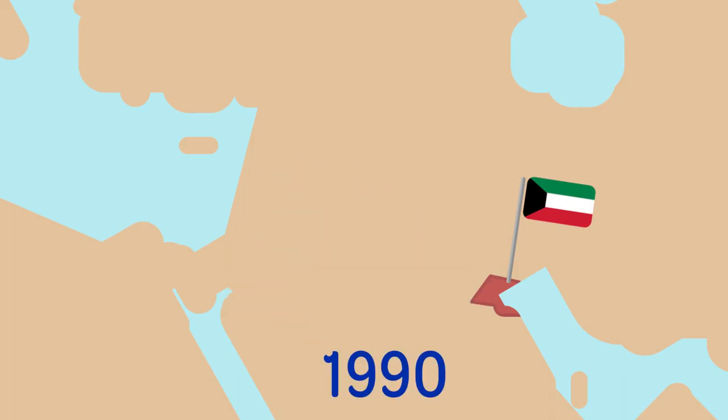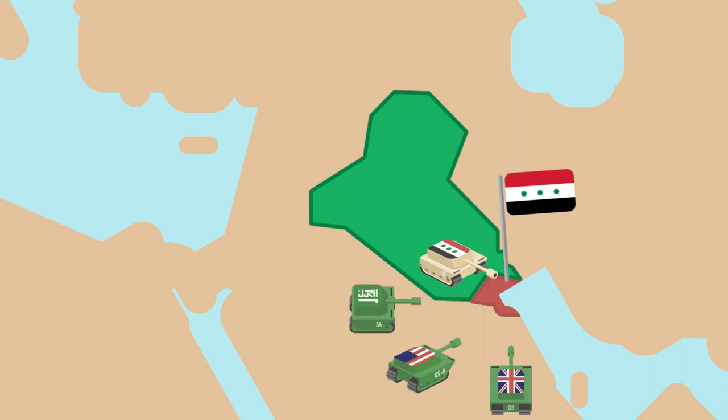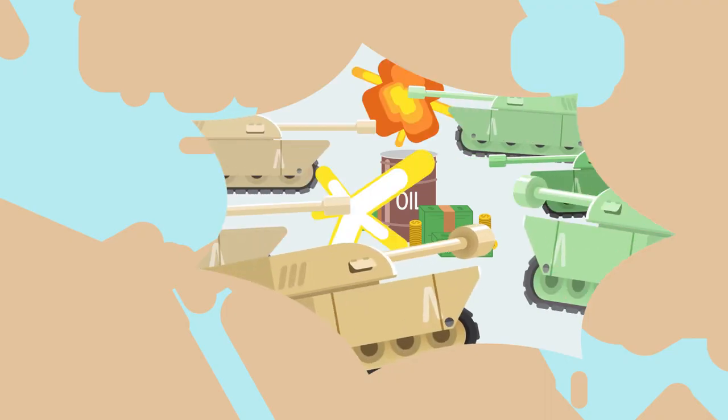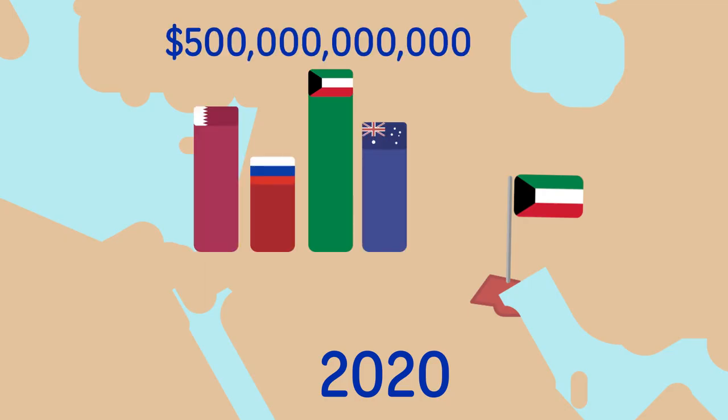In 1990, the tiny Persian Gulf country was invaded and occupied by Iraq, and then freed by 35 nations led by the United States. And yes, this war really was about oil and the wealthy funds that come with it. With a population of only 4.1 million, Kuwait remains sovereign today, and its sovereign wealth fund is estimated to be one of the largest funds in the world, sitting at over $500 billion.